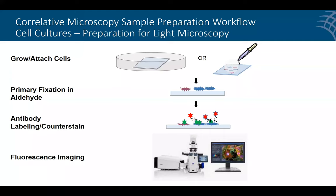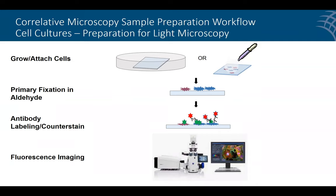To get that correlative image requires a specific workflow. You grow your cells on a coverslip, fix them — in this case platelets are placed on the coverslip and attach within a few moments — then introduce fluorescent stains or antibodies. We used Annexin labeled against a surface protein, and actin as a counterstain. An important note for correlative workflows: you cannot use osmium, heavy metal stains, or solvents upfront. You have to keep everything in a hydrated state.